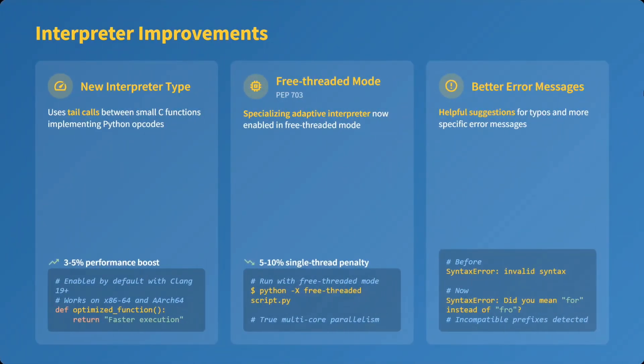There are multiple improvements at the core of Python as well. A new interpreter type uses tail calls between small C functions implementing Python opcodes. This won't be directly visible to you, but it will give a performance boost of three to five percent.